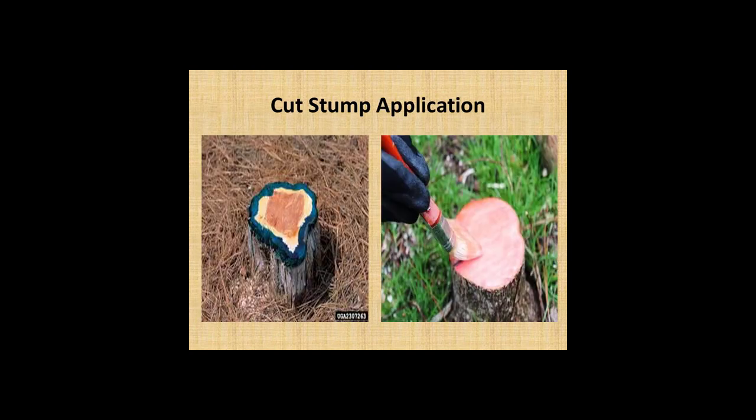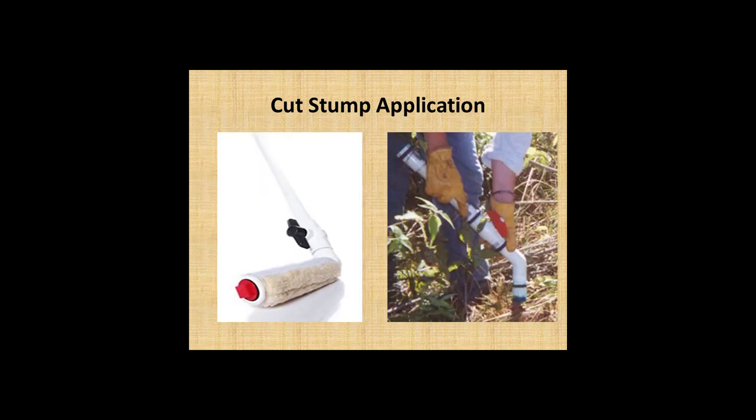Here's a cut stump application. You can see just the outer layer — the living portion of this plant. This is heartwood, which is not living, so there's no need to apply herbicide there. Here's somebody who's tried to use even less herbicide — they sprayed herbicide on a paintbrush and just painted the stump. That was likely an oil-based herbicide. I call this the hockey stick: it's a long PVC pipe with a cap on top that holds herbicide. This nozzle is just slightly open, which wets a wick, and you can apply that directly to the stump. Here's essentially the same tool, just slightly different.